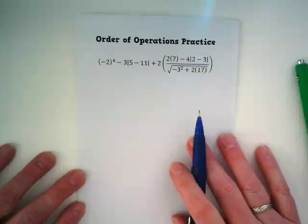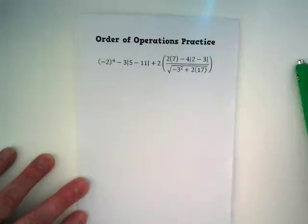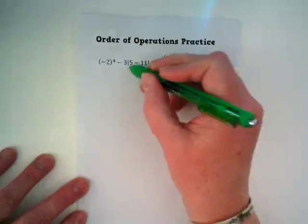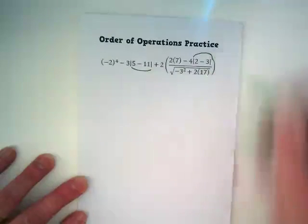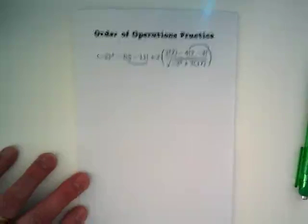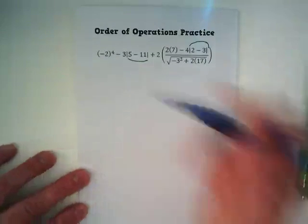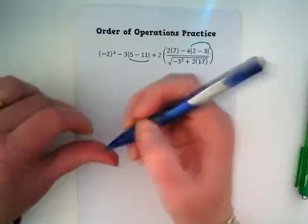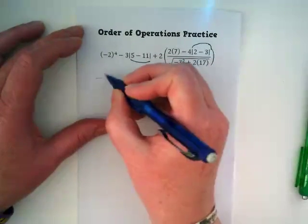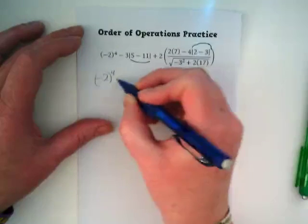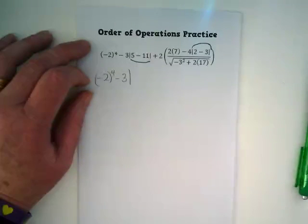When we are working on a problem, we are going to follow order of operations. And I am going to point out to you there are a couple of grouping symbols we are going to start with here. I am going to start with this grouping symbol and this grouping symbol. Everything else in the problem that is not being simplified, we just rewrite it until we get to it. So we are going to start off on the left and you are going to want to write kind of small because there is a lot of steps to this problem. We are going to start off with (-2) to the fourth power minus 3 times the absolute value. What is 5 minus 11?